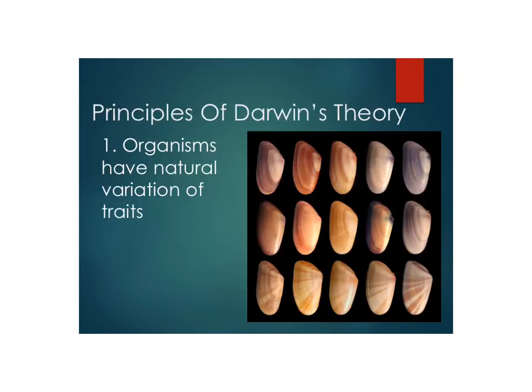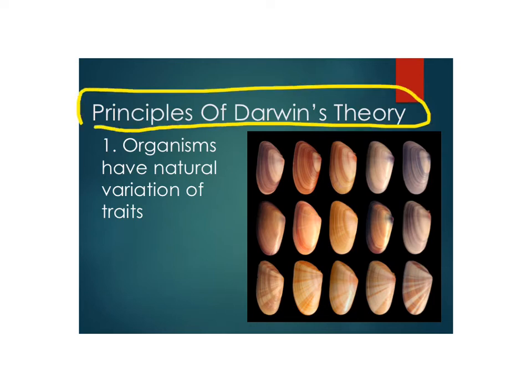There are four principles of Darwin's theory. If you write nothing else down from this lesson, please write this stuff down. If you understand these four principles, you've got it — you understand the theory.